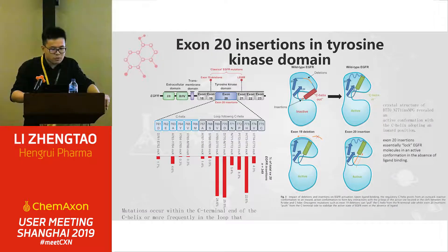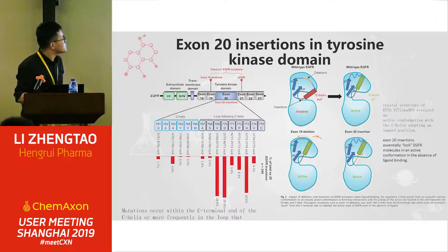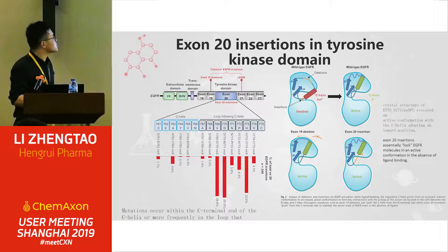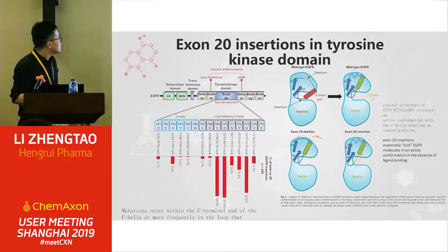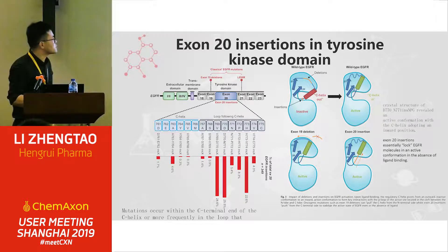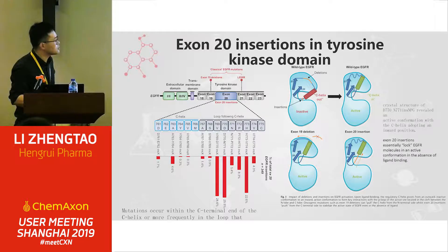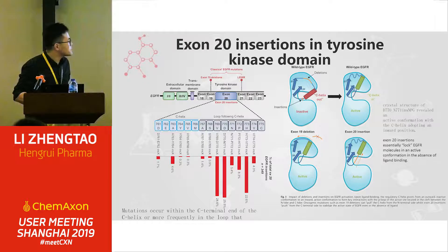A little bit about the introduction to exon 20 insertions in the tyrosine kinase domain. There is an extracellular domain and an intracellular domain. Exon 20 insertions happen on the tyrosine kinase domain, which is in the intracellular domain, from residues DE767–681 to 16775. Among those, the most insertions happen between residues 769 and 777, and those account for about 50% of insertions. This structural cartoon elucidates how and why exon 20 insertion mutations and exon 19 deletions are active mutations.